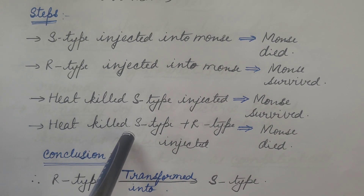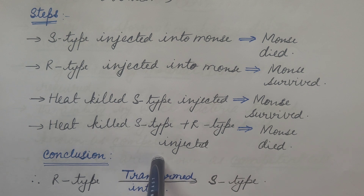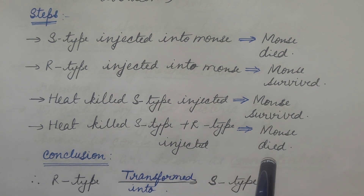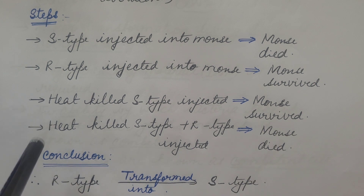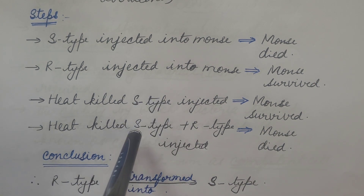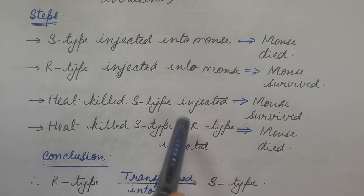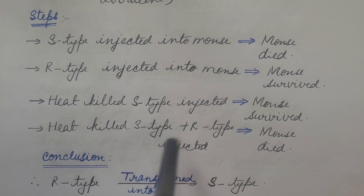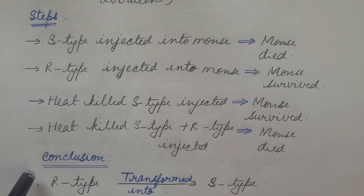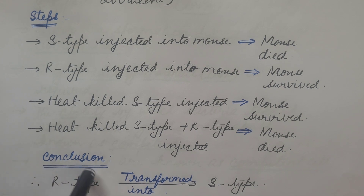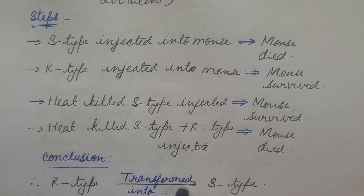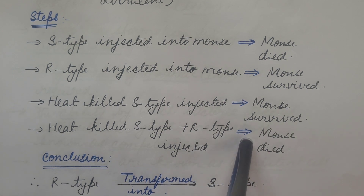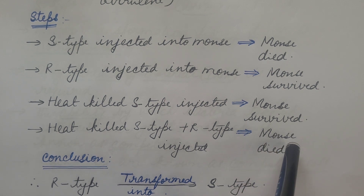But when heat-killed S-type was mixed with alive R-type and injected into the mouse, the mouse died — that means disease occurred. But how is it possible? Because the S-type, which is the virulent one, is dead — it is heat killed — and only the R-type, which is avirulent, is alive. So it was concluded that R-type was transformed into S-type.